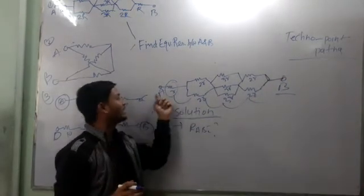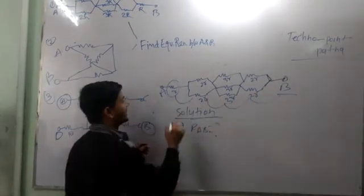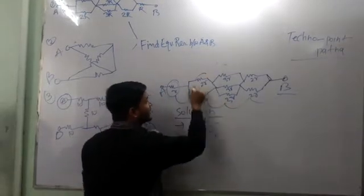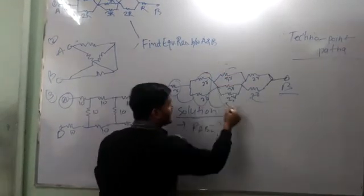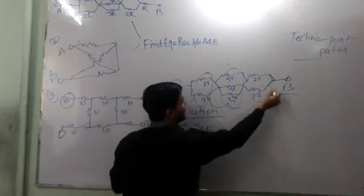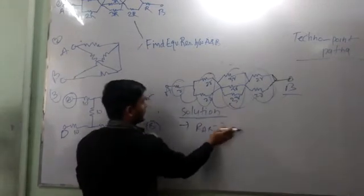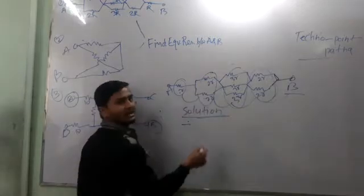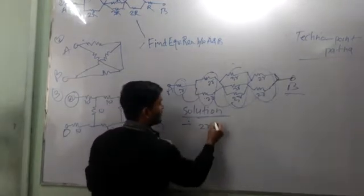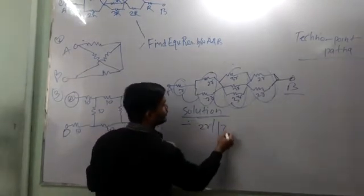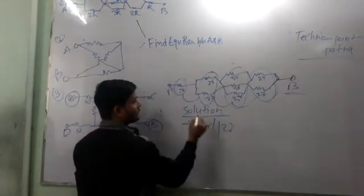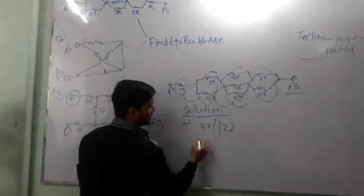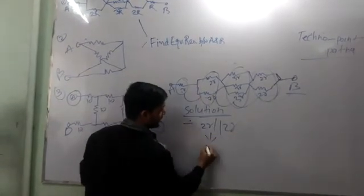The equal resistance between A and B — how do we get the series? But this is in parallel, and this is in parallel. Now it turns out they have R.